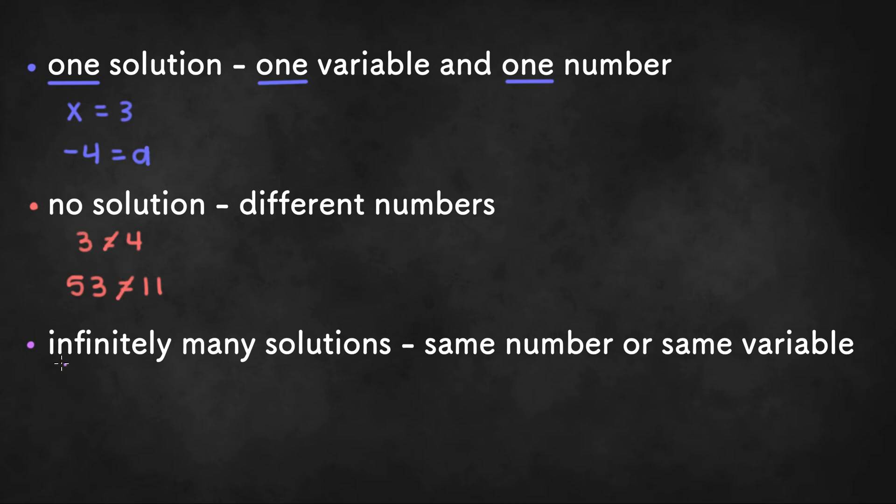Last but not least, if there are infinitely many solutions, then the same variable or the same number will be on both sides of the equal sign. What I mean by this is that if you get something like z equals z or 12 equals 12, then there are infinitely many solutions to the equations. You can plug more than one number into the variable and the equation still stays true.